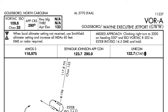This approach, the VOR Alpha approach, doesn't indicate a runway. This means that this approach has circling minimums only. It will bring you to the airport, however it will not align you within 30 degrees of a runway of landing.